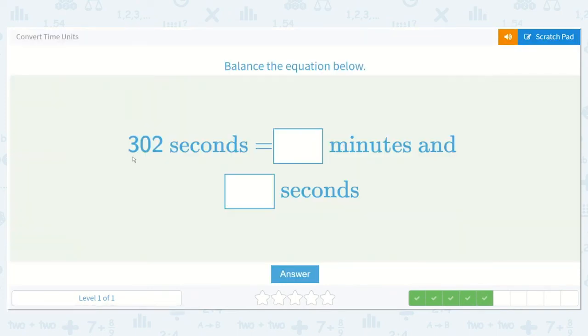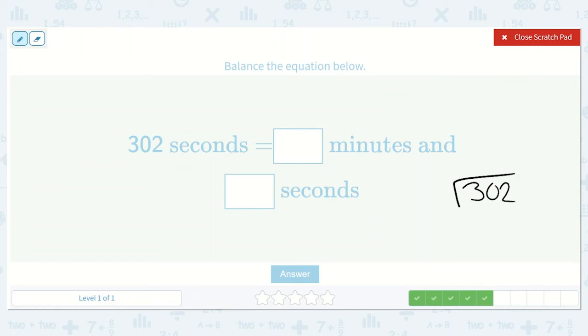Here we have 302 seconds is equal to how many minutes and how many seconds? Well, I know that there are 60 seconds in a minute, so I could take 302 and divide it by 60.